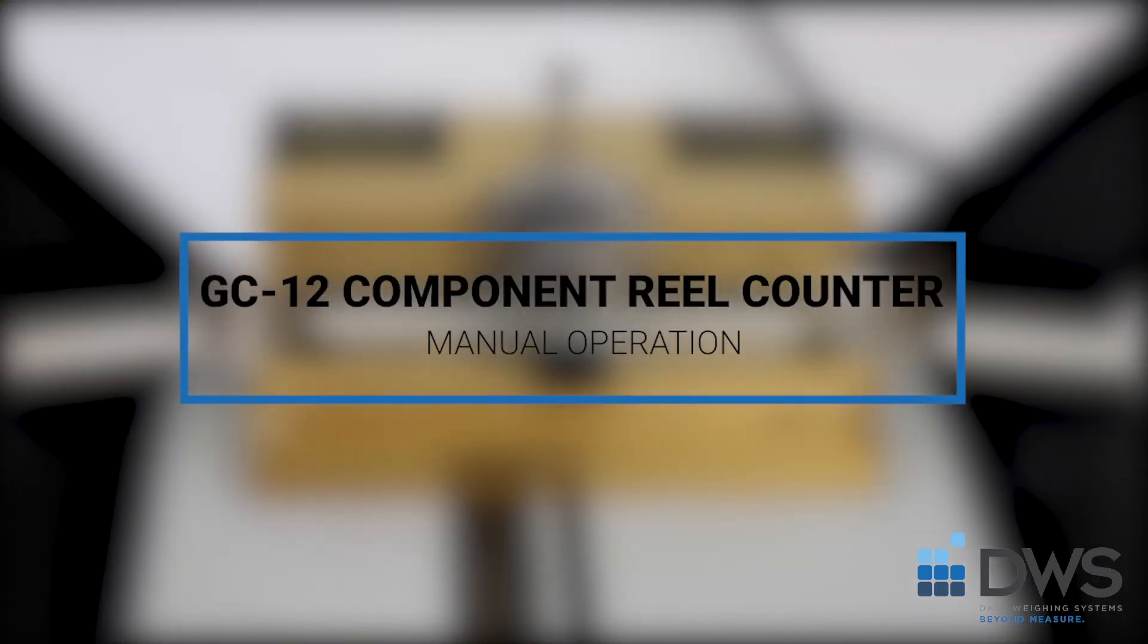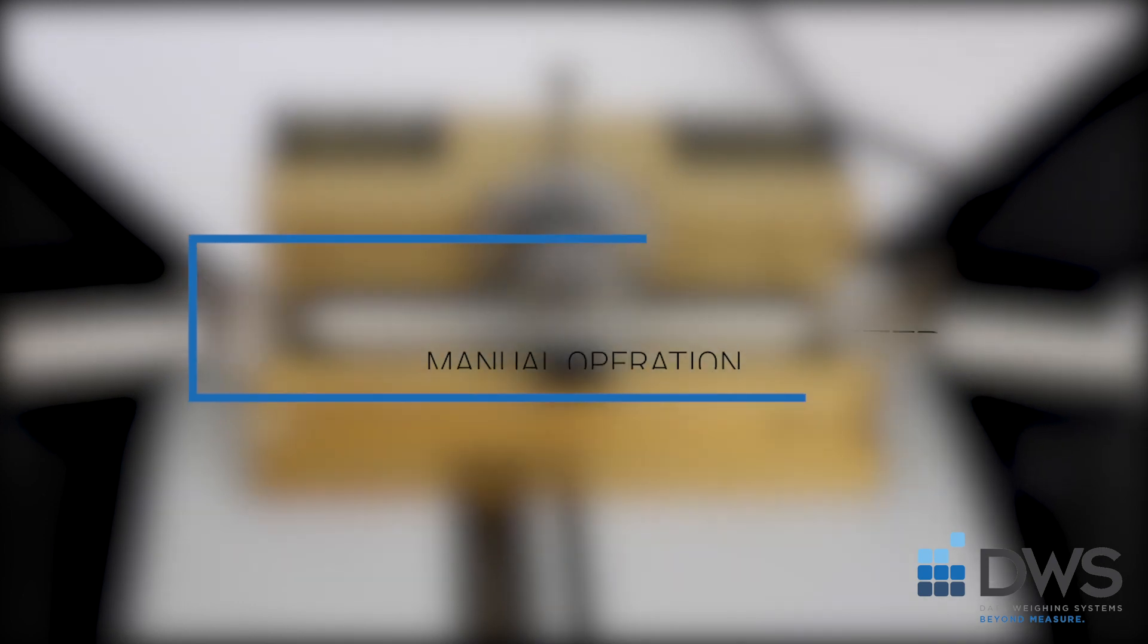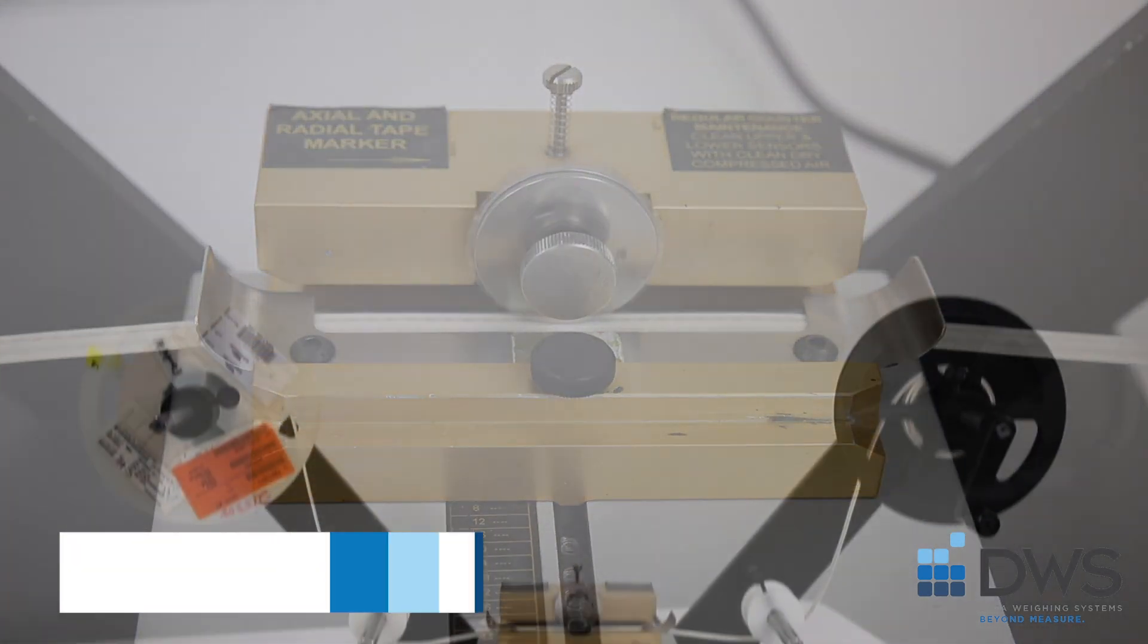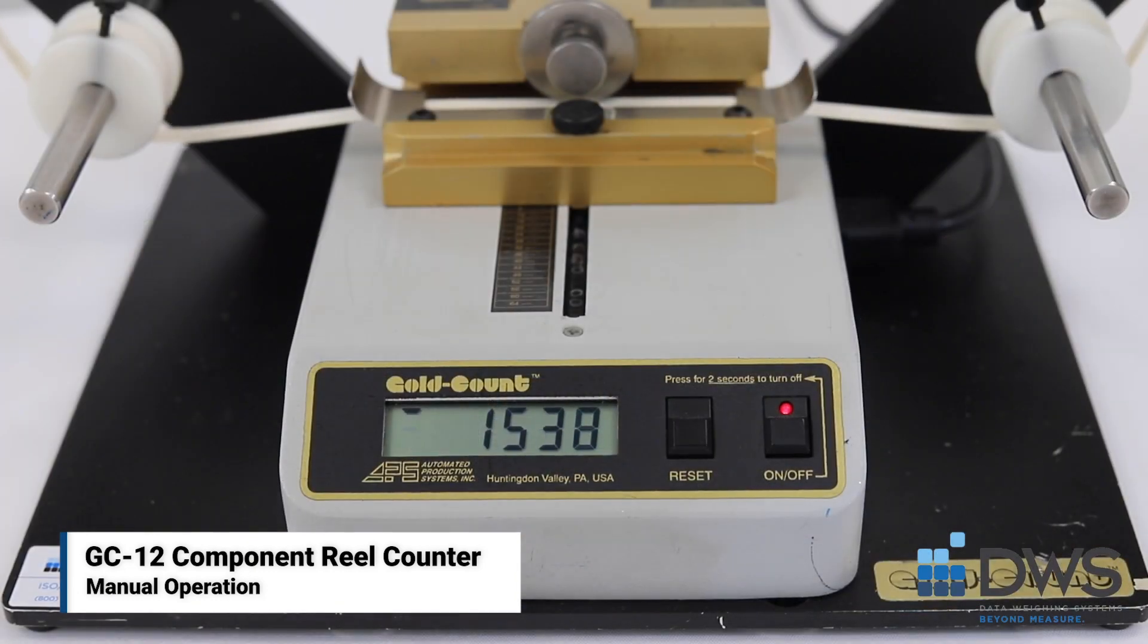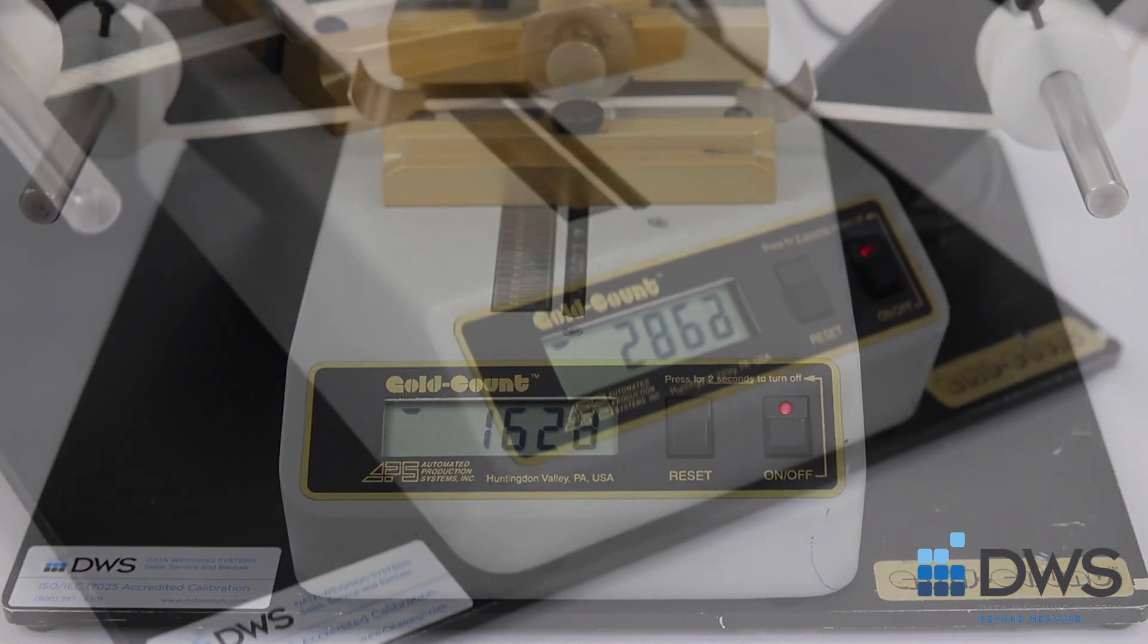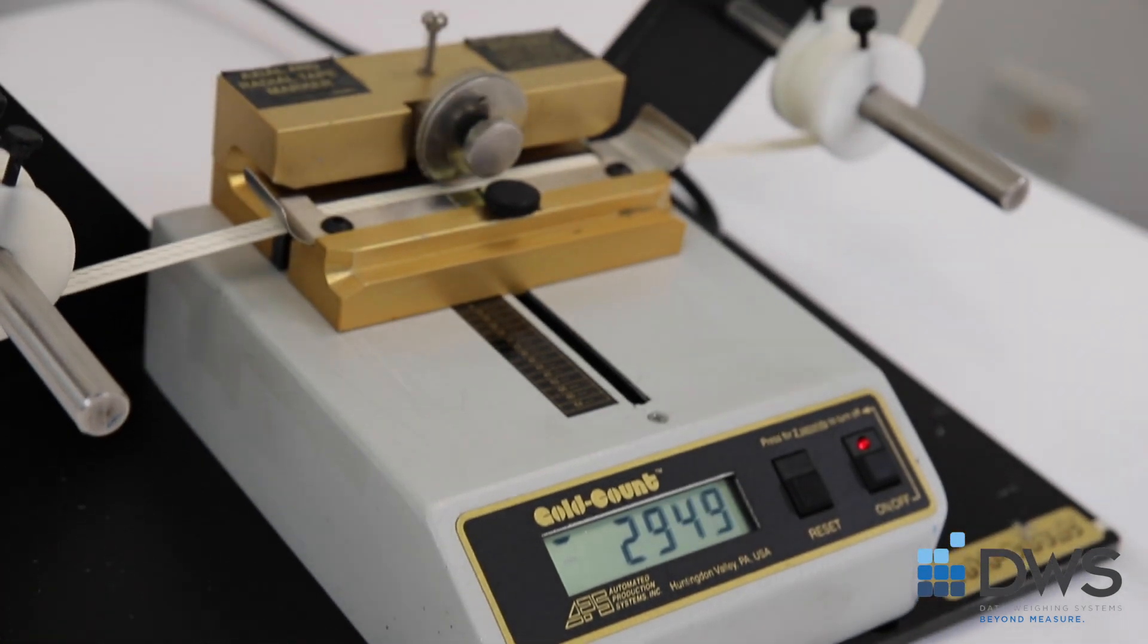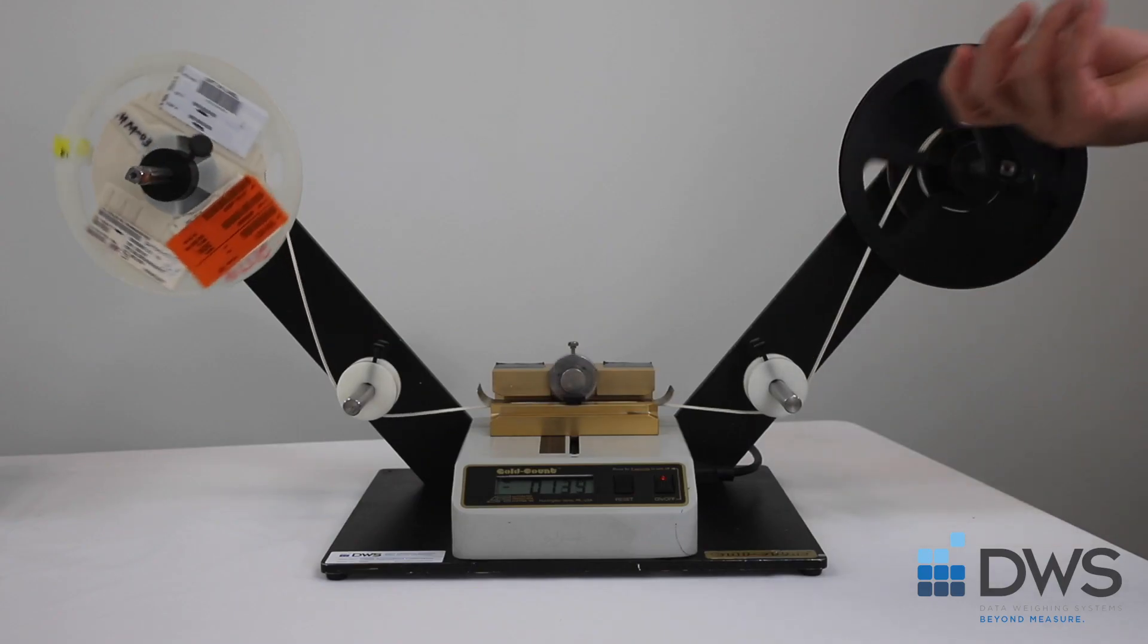If you have a mixture of axial, radial, and surface mount components, we recommend the GC12 manual reel counter. This is a simple, single unit reel counter that can be easily set up and allow you to do cycle counts and physical inventory.